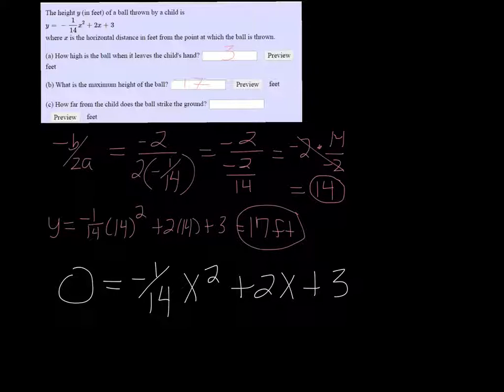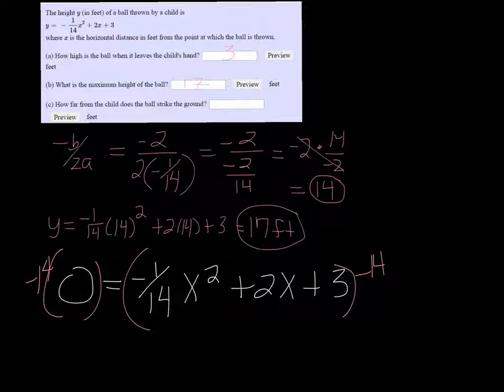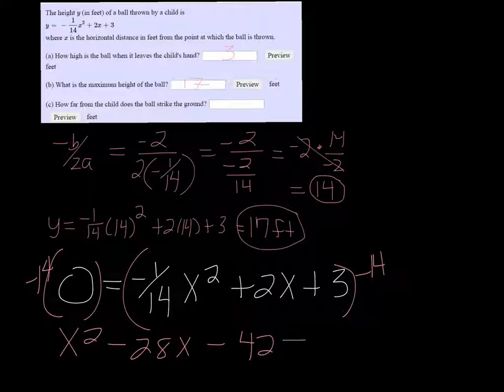Let's see if we can multiply both sides by negative 14 and make this a little friendlier for us. So the left side, which I'm going to now make the right side, is still 0, but we get just plain old x squared minus 28x and minus 14 times 3 is 42. So minus 42 equals 0, and I believe this can be factored.